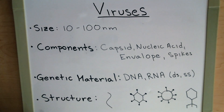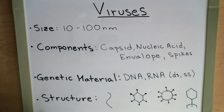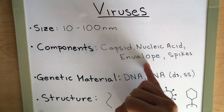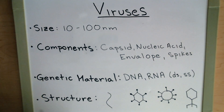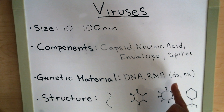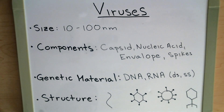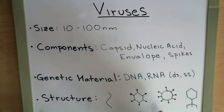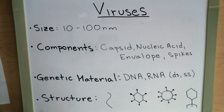Let's review. The size of a virus can range anywhere from 10 to 100 nanometers — very small compared to bacteria that we've been looking at for pretty much the entire quarter. The components of viruses are capsids, nucleic acids, some viruses have envelopes but not all, and spikes. The genetic material is either DNA or RNA — any combination of the two can be double-stranded or single-stranded. The structures we've looked at are helical, polyhedral, envelope, and complex. If you have any questions, please feel free to shoot me an email, and I look forward to hearing from you.